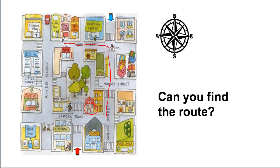Now, how do you go to the theater from the toy shop? This is your starting point. Go to the west, make a quarter turn, and go to the south. The theater is over here. How do you go to the school from the theater? Make this your starting point, go to the south, make a quarter turn to the east, and the school is over here.